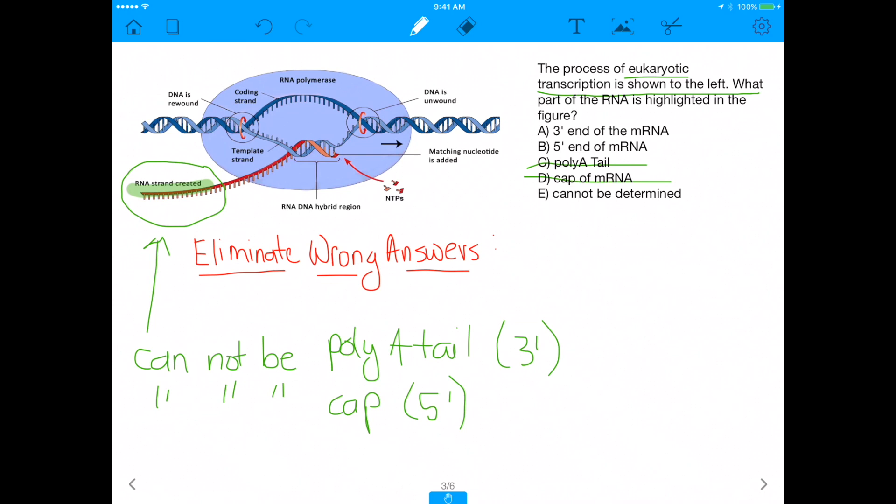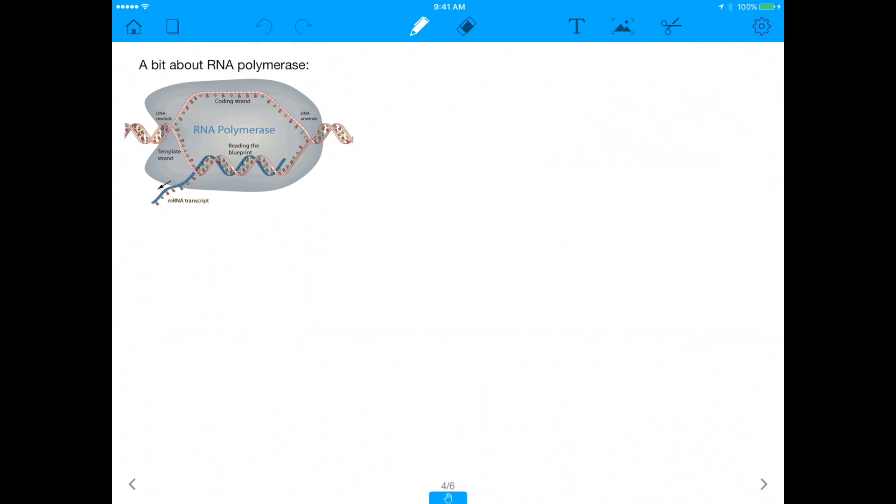All right, so with that, let's move on to the next thing, which is a bit about RNA polymerase. So we talked a bit about transcription, which consists of three phases, initiation, elongation, and termination. But we have not yet talked about the process, the enzyme that's running the show, which is RNA polymerase. RNA polymerase is crazy, okay? And I'm going to tell you why it's crazy.